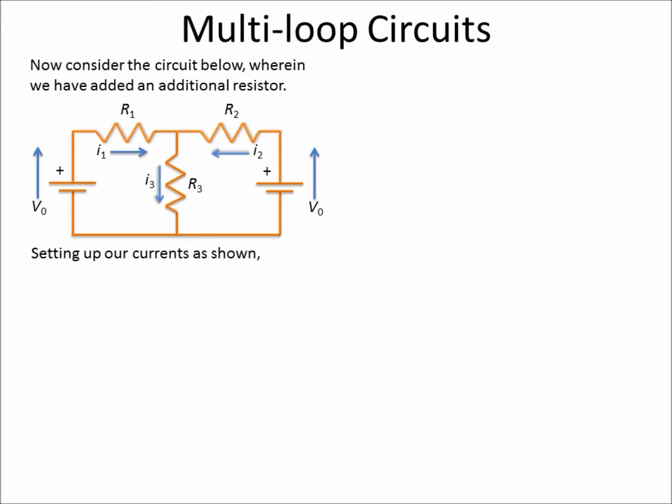Again, we're going to set up our currents: I1 going to the right, I2 going to the left this time, and I3 going down through R3.